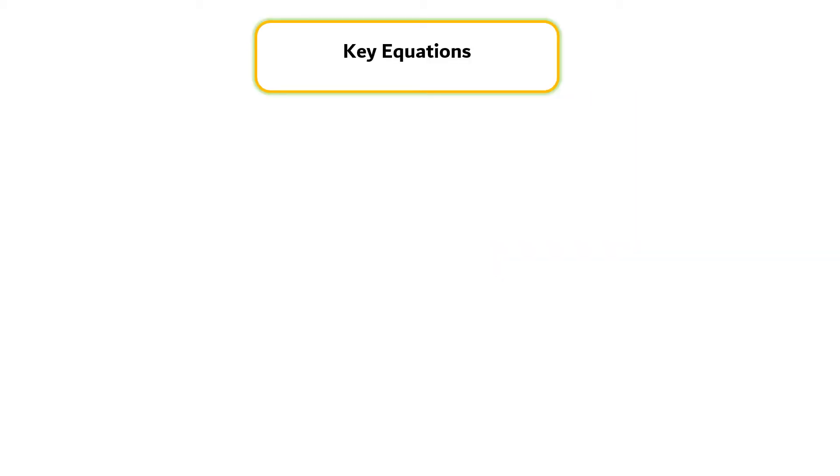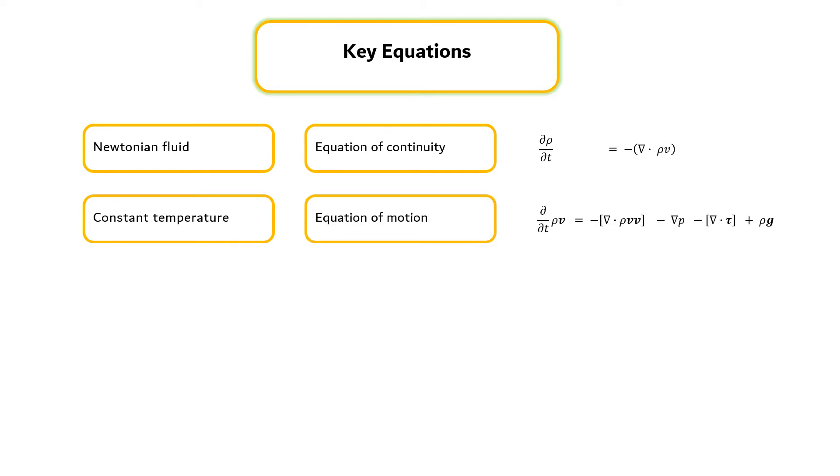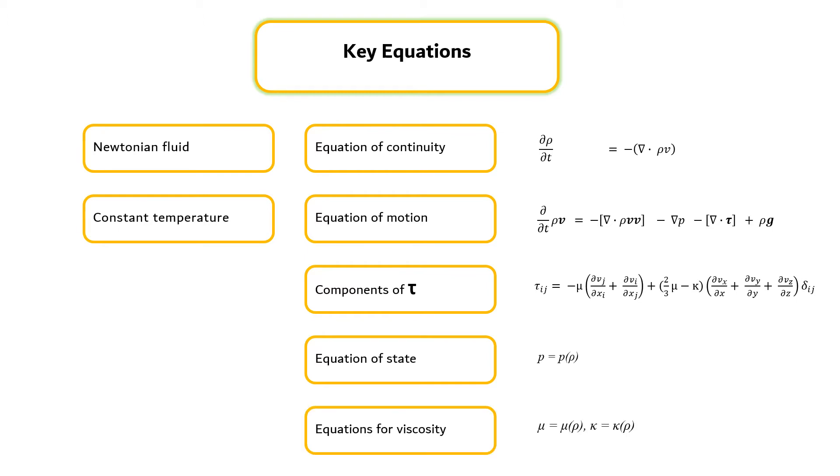To describe the flow of a Newtonian fluid at constant temperature, we need in general the equation of continuity, the equation of motion, the components of tau, the equation of state, and the equations of viscosity. These equations, along with the necessary boundary and initial conditions, determine completely the pressure, density, and velocity distributions in the fluid.